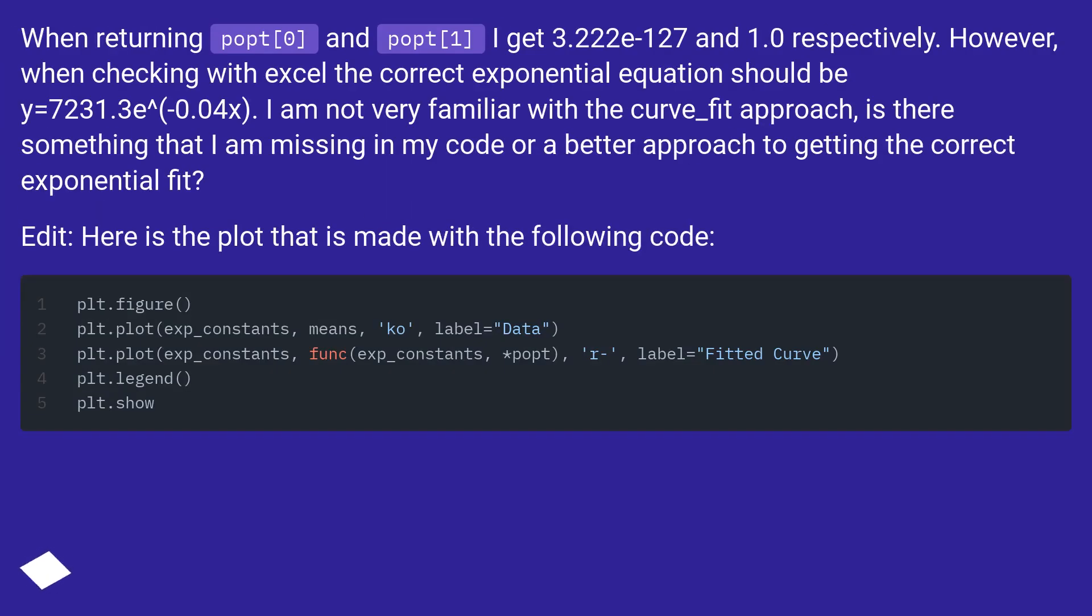When returning popt[0] and popt[1], I get 3.222e-127 and 1.0 respectively. However, when checking with Excel the correct exponential equation should be y=7231.3e^(0.04x). I am not very familiar with the curve_fit approach. Is there something that I am missing in my code or a better approach to getting the correct exponential fit?